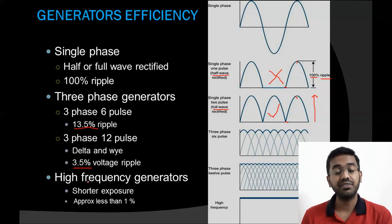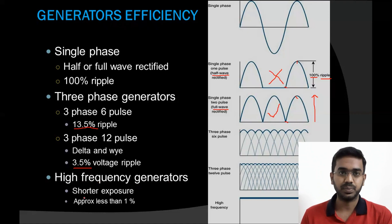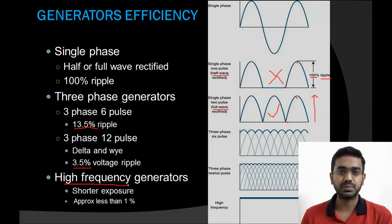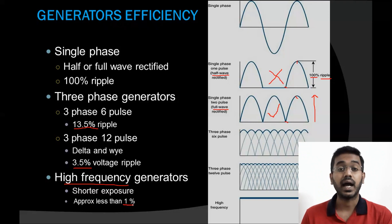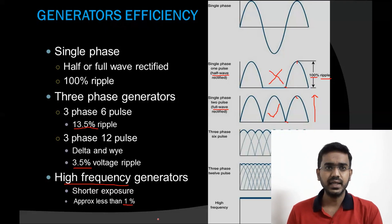Next, the high-frequency generator. In most modern-day equipment, we use high-frequency generators because they have shorter exposure times, the ripple is approximately less than 1%, and the size of the equipment is also smaller. If you want to know about generator efficiency in detail, just comment below and I will make a separate video on this topic.